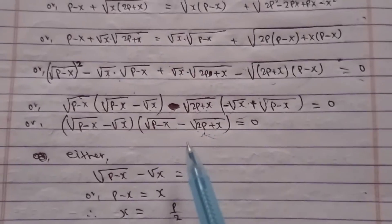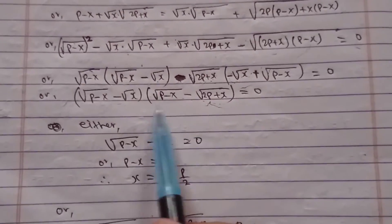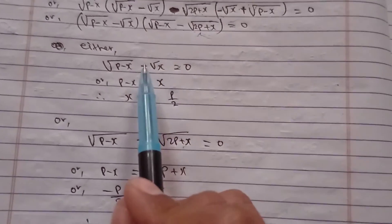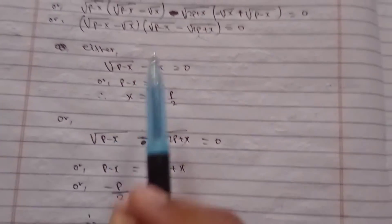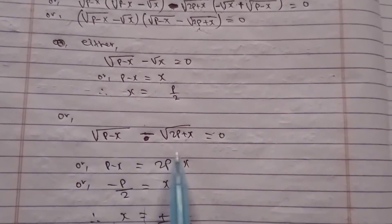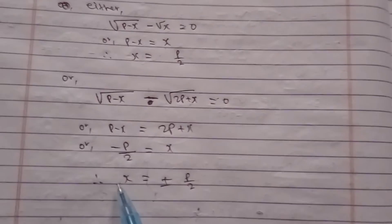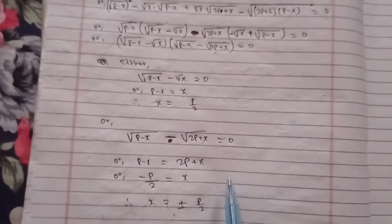Now it seems easier. Either this term equals zero or this term equals zero to find the value of X in terms of P. If the first term equals zero, transpose and square on both sides, then X equals P over 2. If the second term equals zero, transpose and square on both sides, then X equals minus P over 2. Collectively, the value of X in terms of P is plus or minus P by 2. That's all about this problem, thank you.